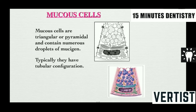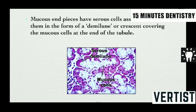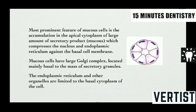Mucous cells are triangular in shape and contain numerous droplets of mucus. They typically have a tubular configuration, with tubules showing round profiles surrounding a central lumen larger than that of serous end pieces. Mucous end pieces have serous cells associated with them in the form of a demilune, which is crescent-shaped and caps the mucous cells at the end of the tubule. The most prominent feature of mucous cells is accumulation of secretory product in the apical cytoplasm, which compresses the nucleus and endoplasmic reticulum against the basal cell membrane, making the nucleus very flat.